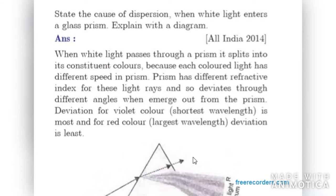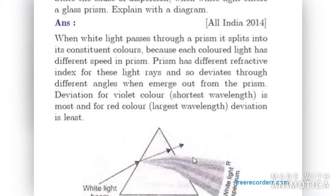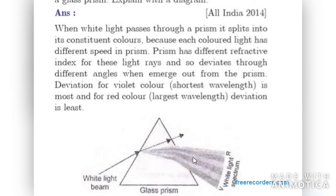Moving on to next. State the cause of dispersion when white light enters a glass prism. When white light passes through a prism, it splits into different colors - VIBGYOR, or it is actually a spectrum. Prism has different refractive index and these colors also have different wavelengths. Therefore, we have deviation within the spectrum. The first one we get is violet, then indigo, then blue, then green, then yellow, orange, and red. The deviation is according to the wavelength. The shortest wavelength comes out first and the largest wavelength comes out last because it is deviated least.